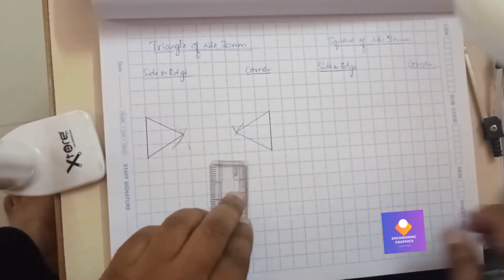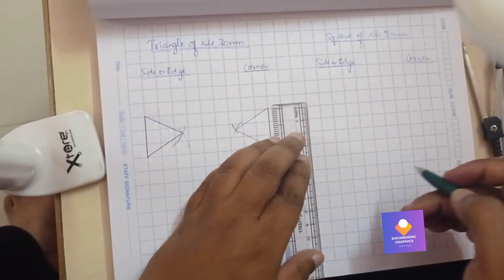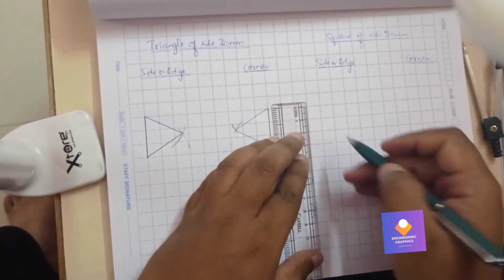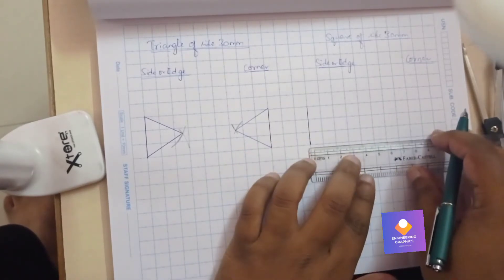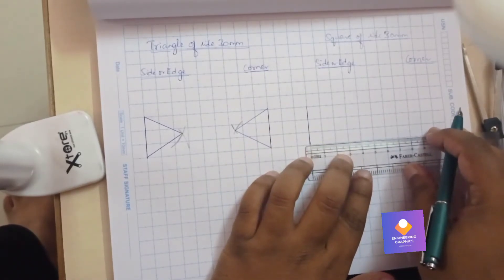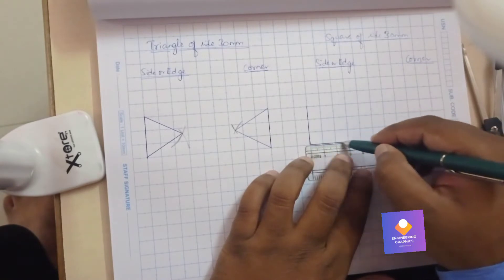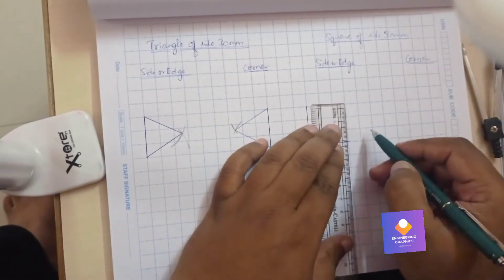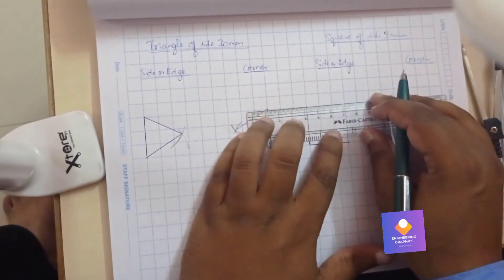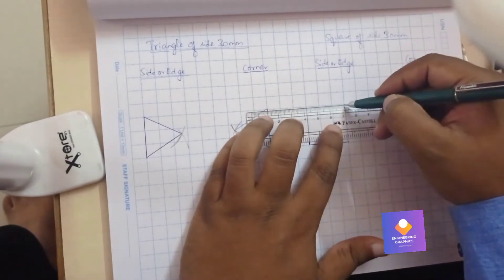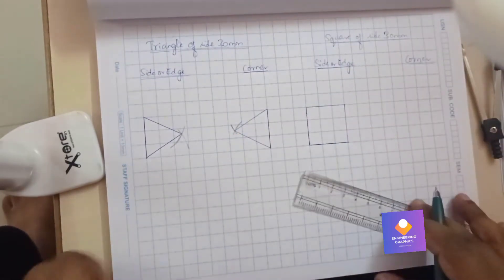Okay, now we construct the square of dimension 30 with respect to edge. For with respect to edge, we have to draw first a vertical line. Then with respect to 30 mm, it is 3 centimeter, we will construct the box here. So construction of square with respect to edge, it is very easy.